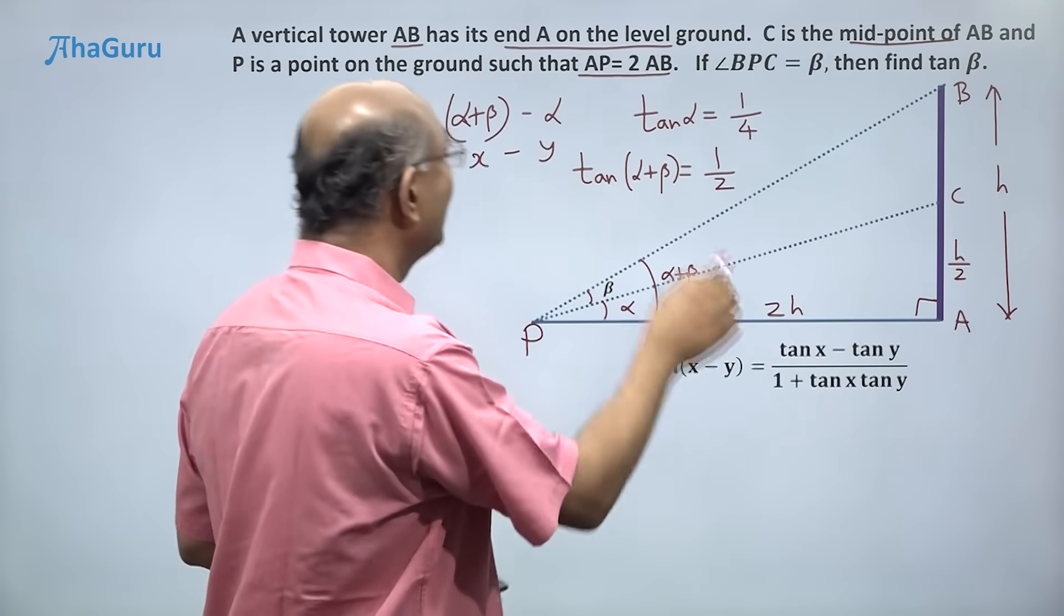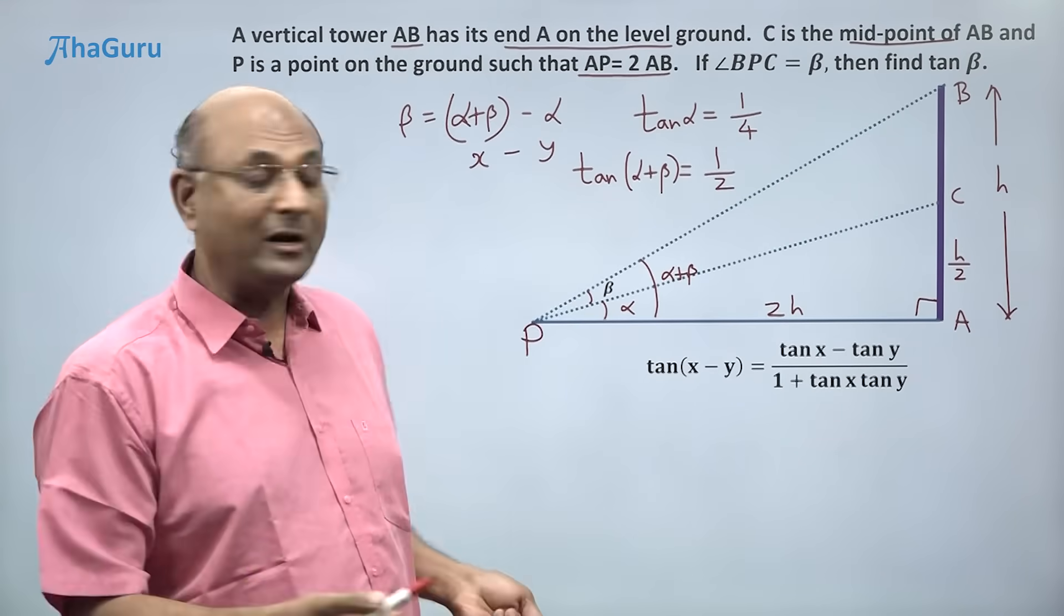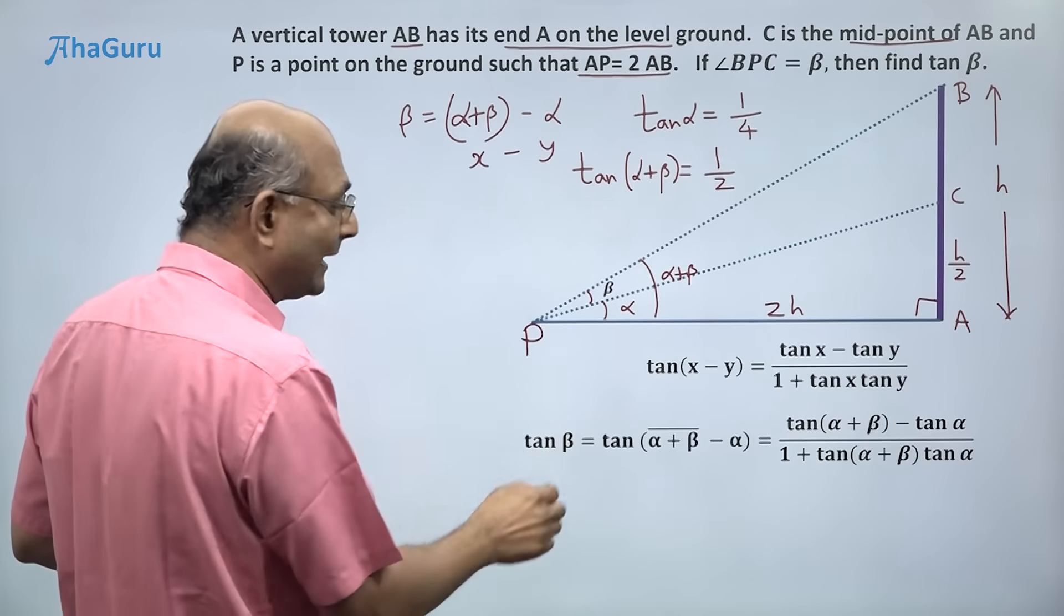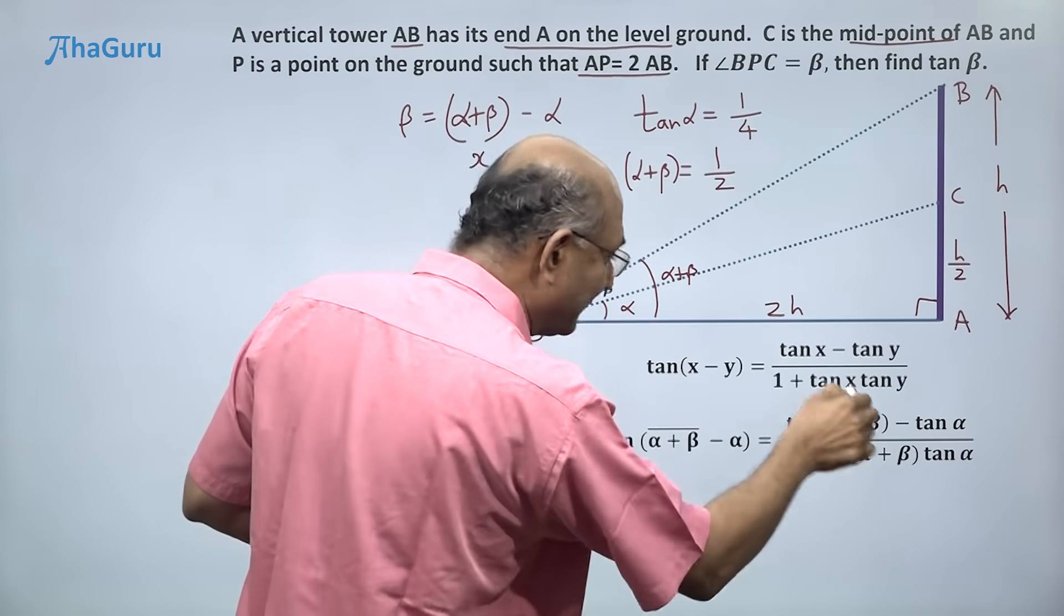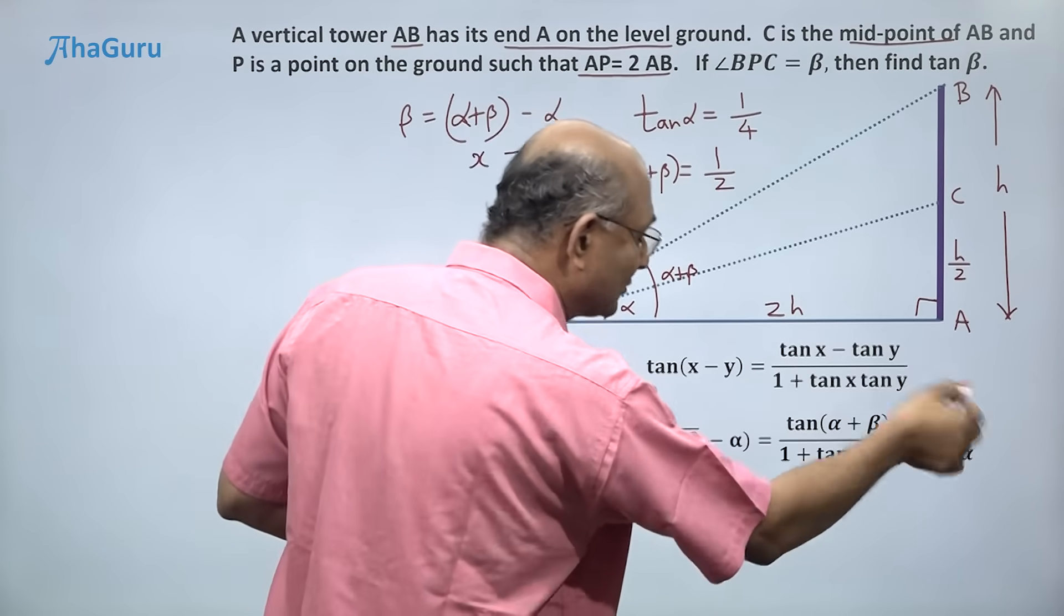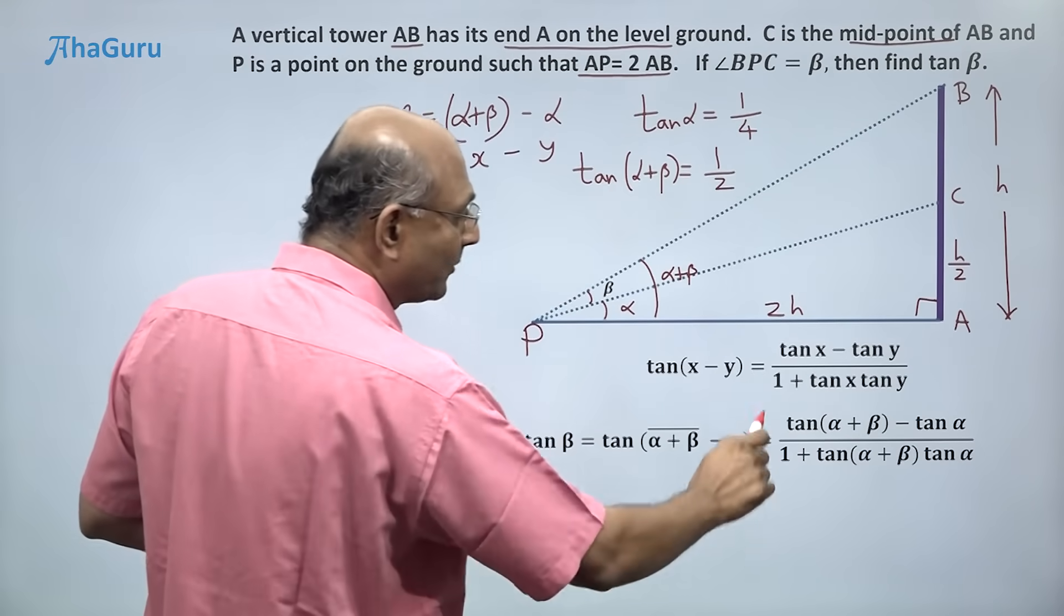So if I now think about tan beta, it is tan of (alpha + beta) minus alpha. Tan of (alpha + beta) minus tan alpha - I'm just using that formula - divided by 1 plus tan of (alpha + beta) tan alpha.